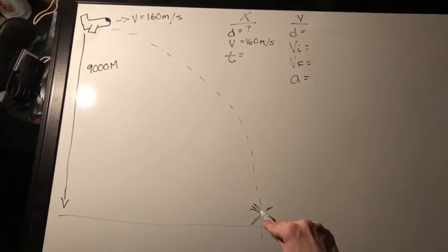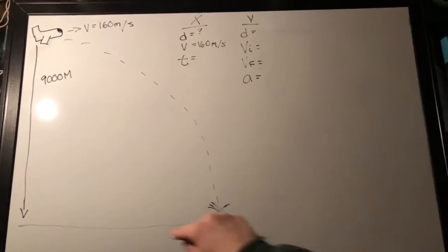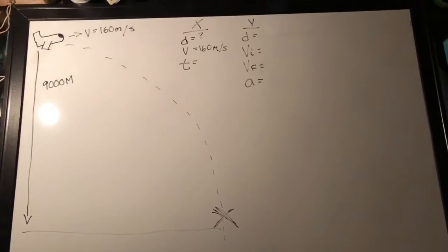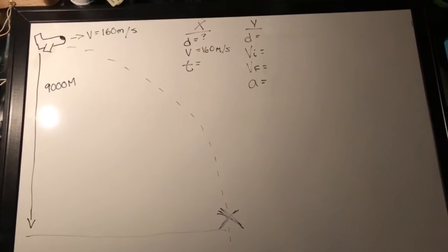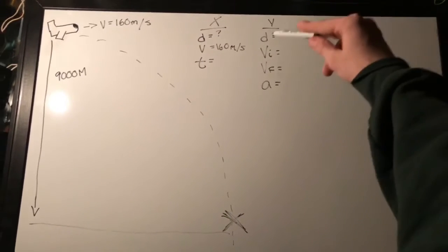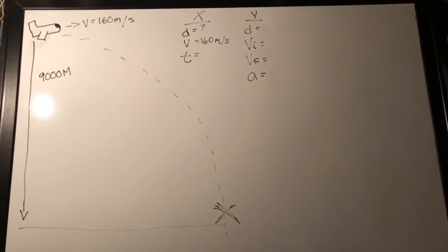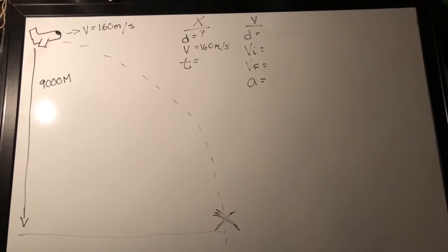Since we are looking for this distance in the x-axis, we will need to be finding the d in the x. And since we already have the velocity, the only thing we will need to find is the time.